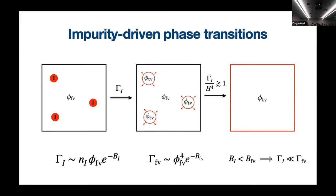The picture changes somewhat if we have impurities present. These red dots are our impurities, and there's some new rate at which these impurities turn into bubbles of true vacuum. This new rate depends on the number density of impurities and a different tunneling exponent describing the transition from the impurity to a bubble of true vacuum. Because of this exponential dependence, if the bounce action for the impurity-driven transition is smaller than the false vacuum case, this rate can be much much faster.